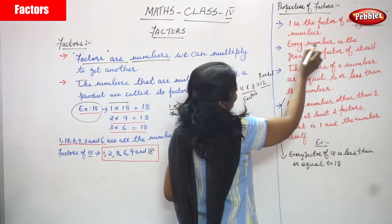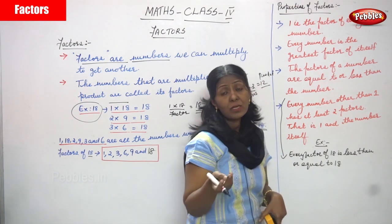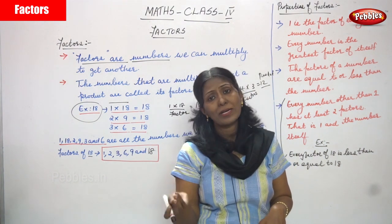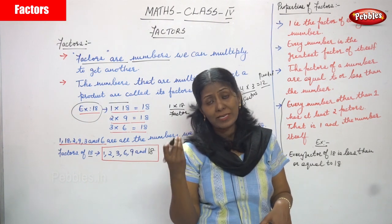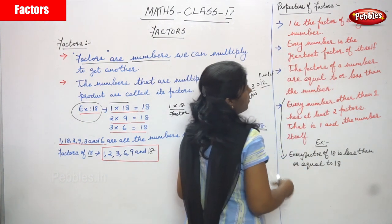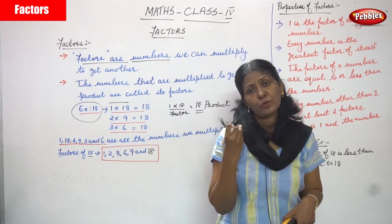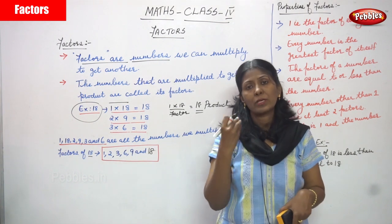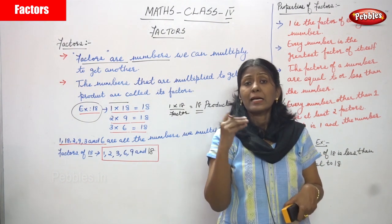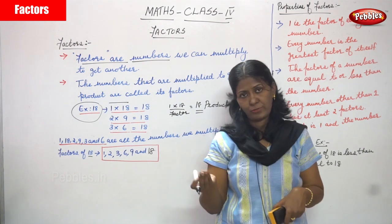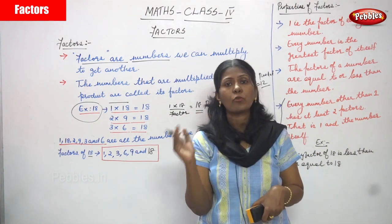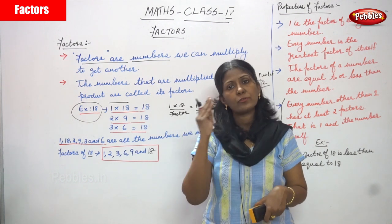Now we are going to see the properties of factors. Property 1: 1 is the factor of every number. Whatever number you take — 16, 14, 15, 10, 5 — 1 into that number gives the number itself. So 1 is the factor of every number. Property 2: every number is the greatest factor of itself. For example, what are the factors of 15? Consider the multiplication tables: 1 into 15 gives 15, and 3 into 5 gives 15.